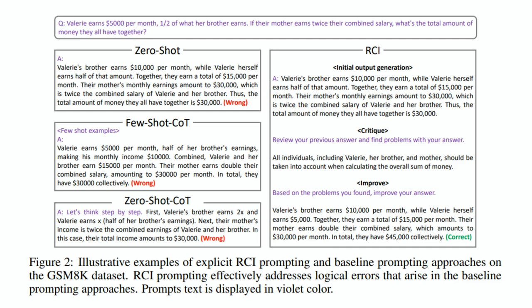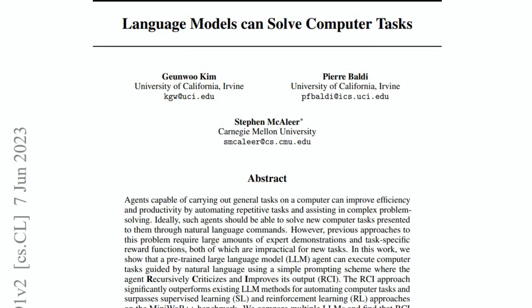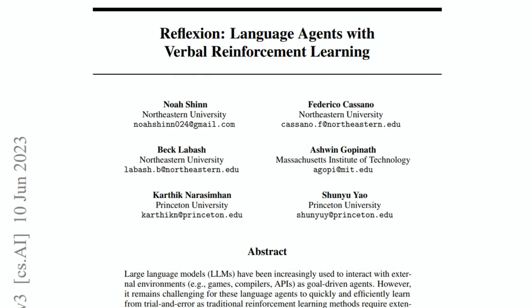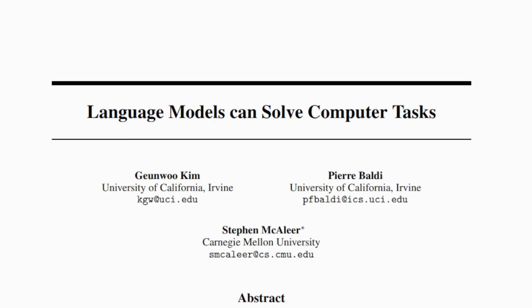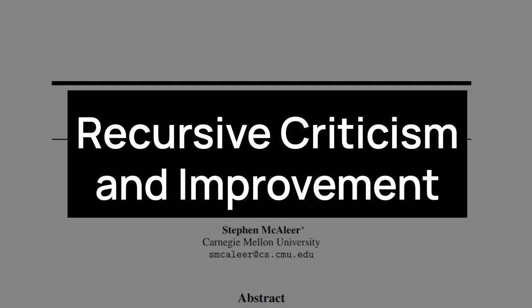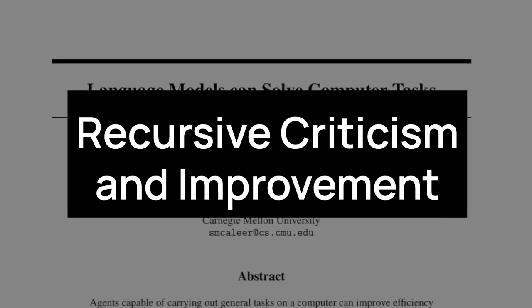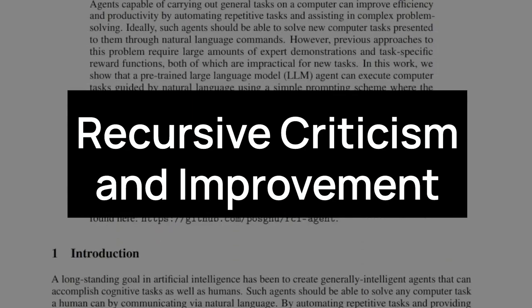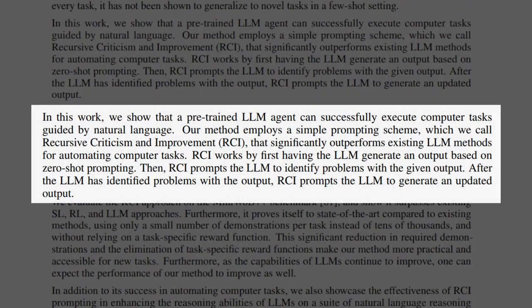This has a lot to do with the autoregressive nature of language models, but it's really kind of magical in many ways. The thing we're going to look at is this idea of an RCI chain, which comes from a paper called 'Language Models Can Solve Computer Tasks.' The idea also comes from another paper called 'Reflection' — these two papers have a lot of commonalities. RCI stands for Recursive Criticism and Improvement.